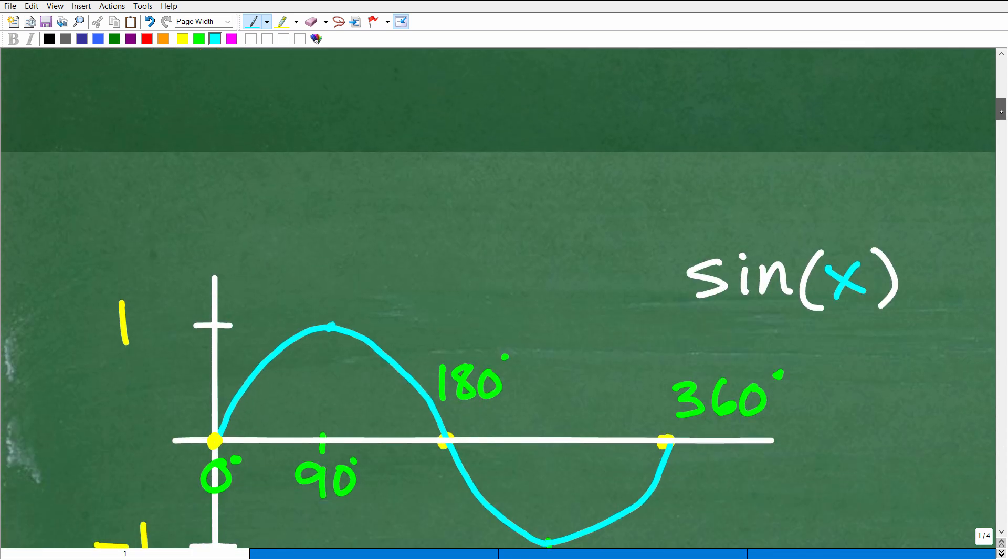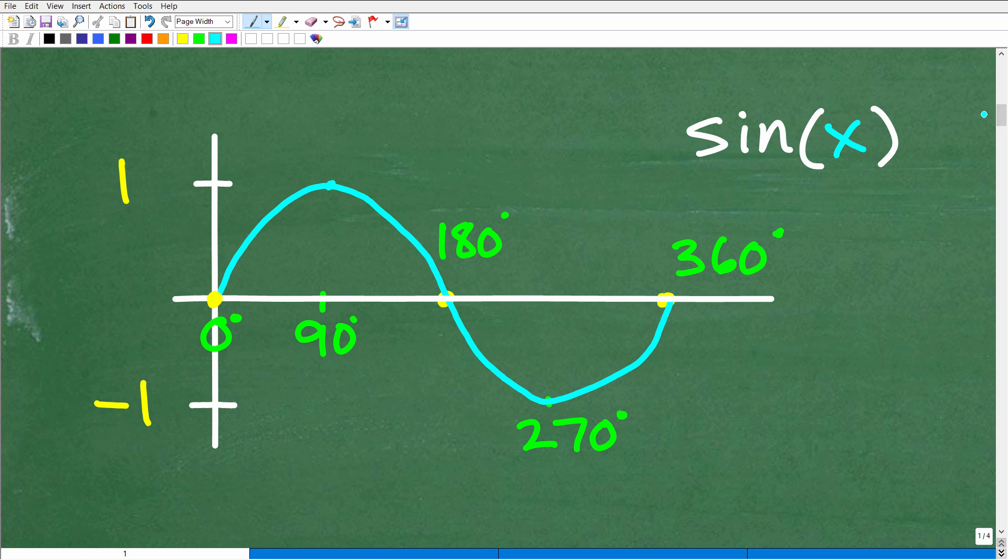So we want to figure out what the value, a reasonable estimate, would be for sine 185 degrees. So we'll get to that in one second, but let's just take a look at the basic sine function graph. Now, sine, cosine, and tangent, these functions are called periodic functions, which means they just continue on and on. So this would be one period of the sine graph. So the very similar, just depends on sine starts at zero and cosine starts at one, right?